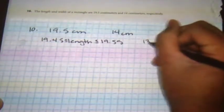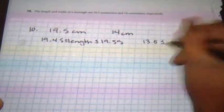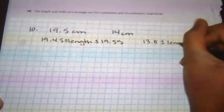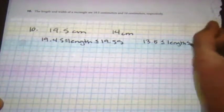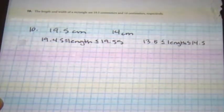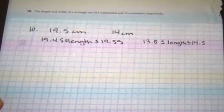14 cm we're going to put 13.5 cm. We only go to the tenths place. It's less than or equal to the length, and then that's going to be less than or equal to 14.5 cm. So again, I'm giving that 0.5 room for error on either side.